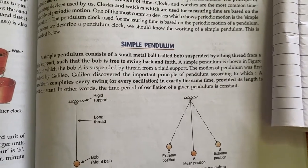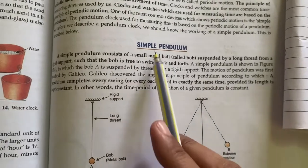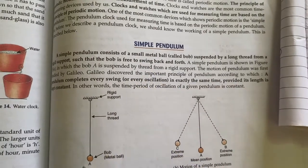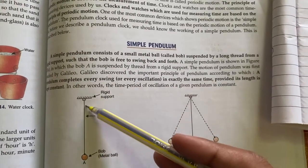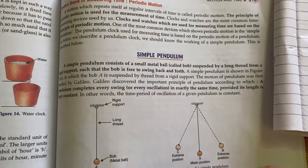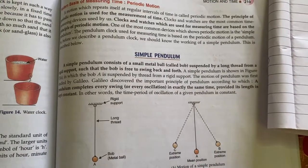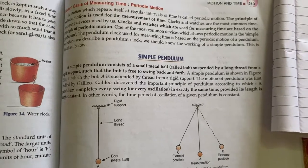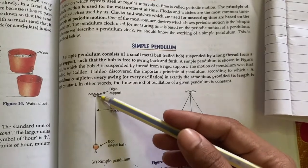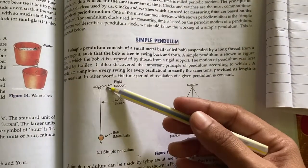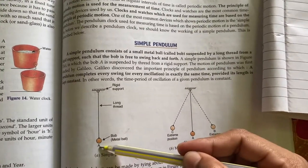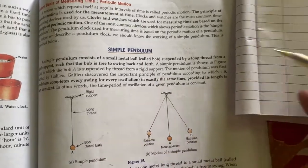Simple pendulum - the definition. A simple pendulum consists of a small metal ball suspended by a long thread from a rigid support such that the bob is free to swing back and forth. It means that simple pendulum is a small metal ball, a long thread, and a rigid support which is free to move. The bob is free to move.